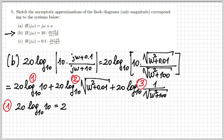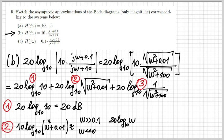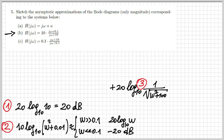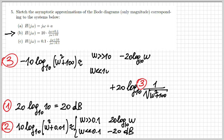Labeling the three terms: term one is constant at 20 dB. Term two has a cutoff at ω = 0.1; for smaller frequencies it's constant at −20 dB, and for larger frequencies it grows by +20 dB per decade. Term three has a cutoff at ω = 10; for smaller frequencies it's constant at −20 dB, and for larger frequencies — where ω² dominates 100 — it decays at −20 dB per decade.